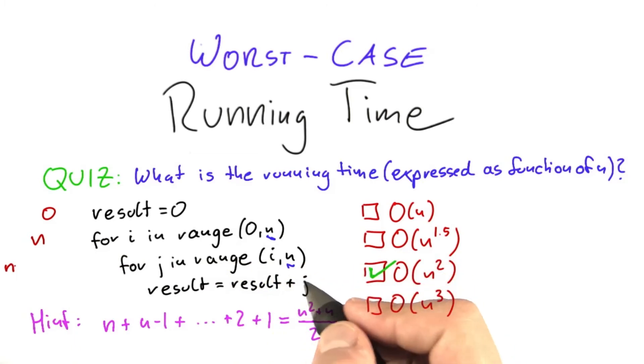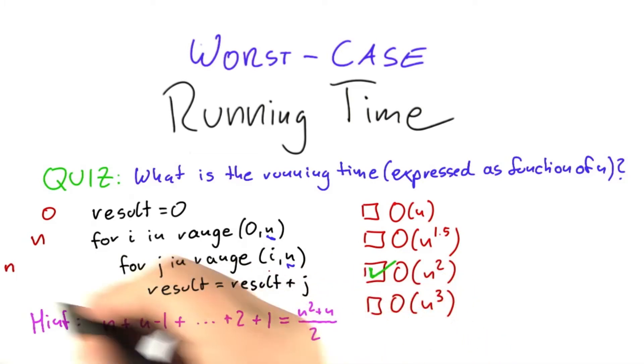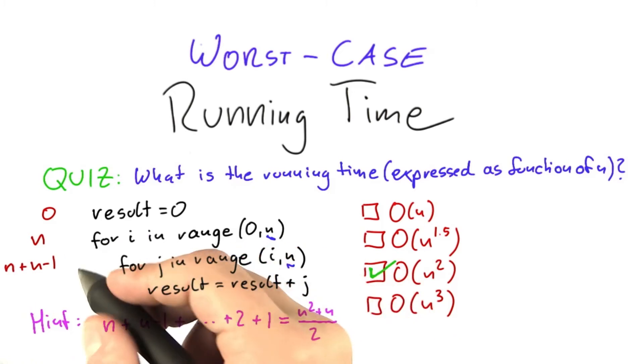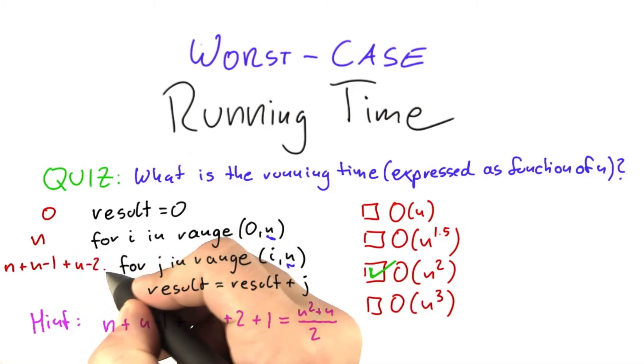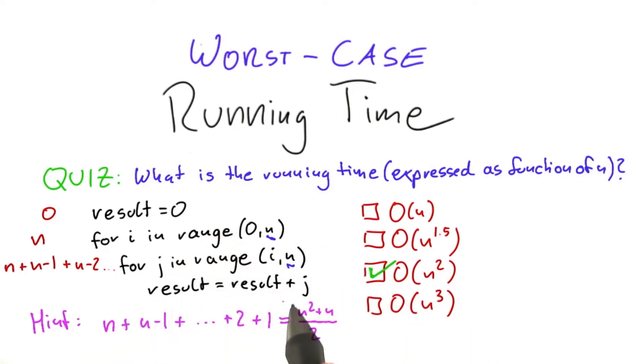So here we have the first time we're going to have n time steps. The next time we're going to have n minus 1 time steps. The next time we're going to have n minus 2 time steps and so on. And the same basically also holds true for this inner loop here. So if this is executed n times, then the inner loop here, again depending on how you count that, is going to be executed n times or n minus 1 times.